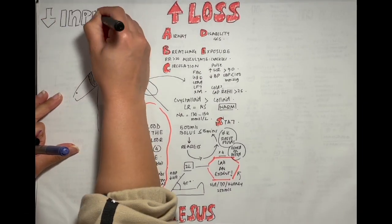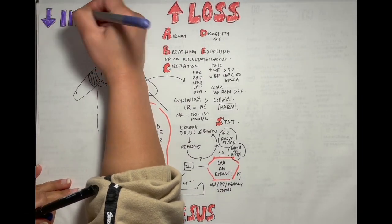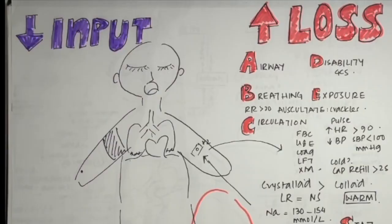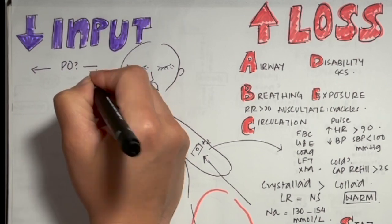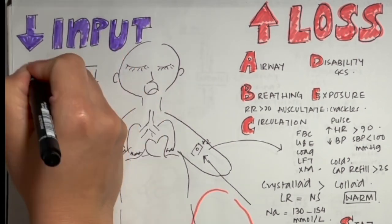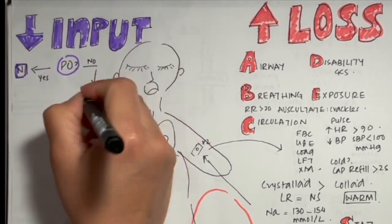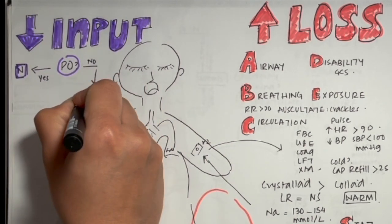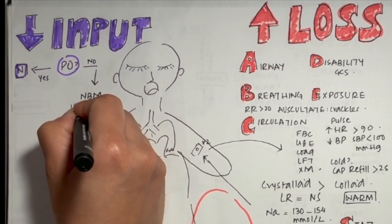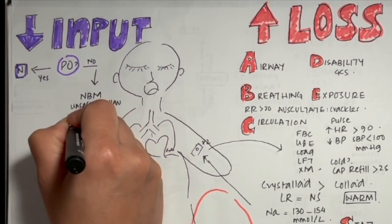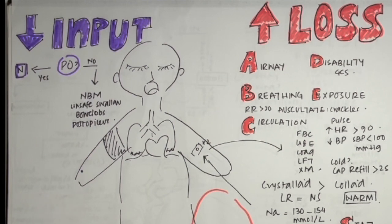There are situations where the patient isn't taking in enough fluids. Check whether they're able to eat or drink orally. If yes, encourage oral fluids. However, if they are unable to do so — if they're kept nil by mouth for surgery, have an unsafe swallow, can't drink due to bowel obstruction, or have post-op ileus — you'll need to replace their daily needs.